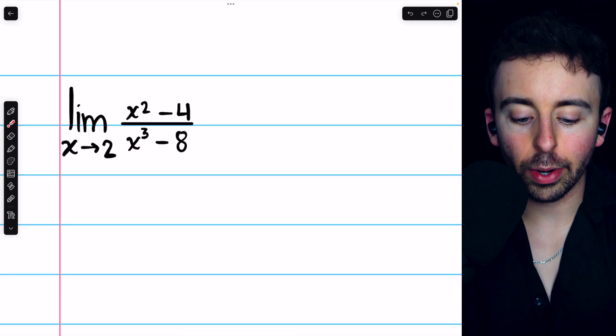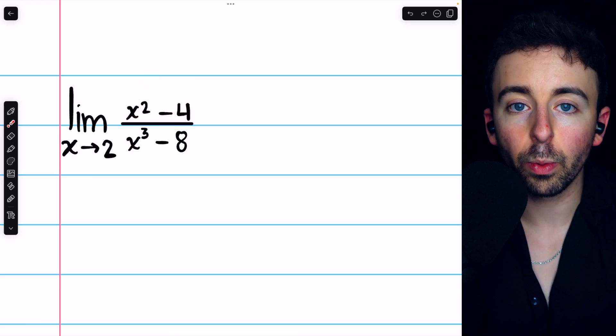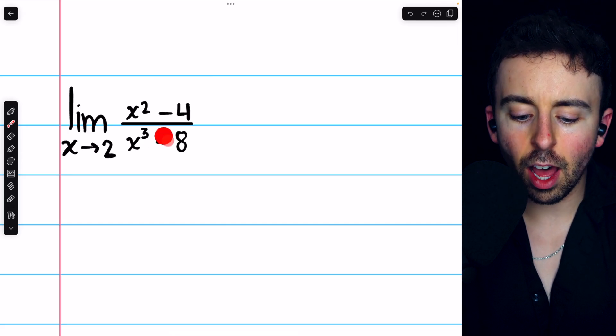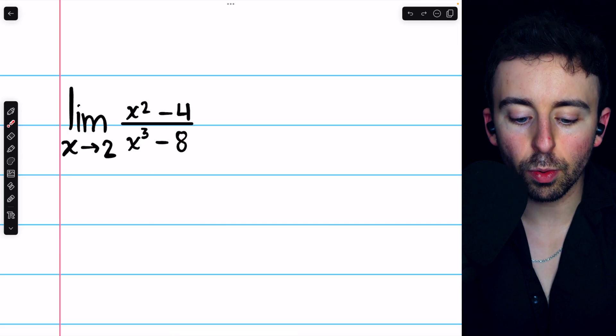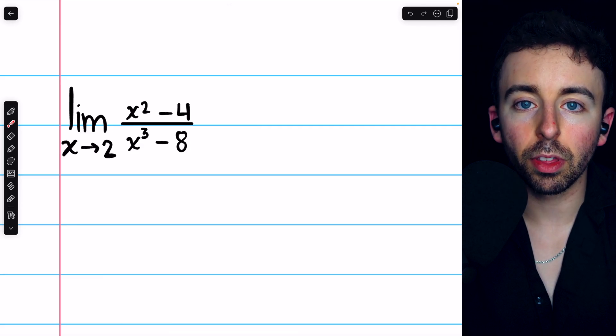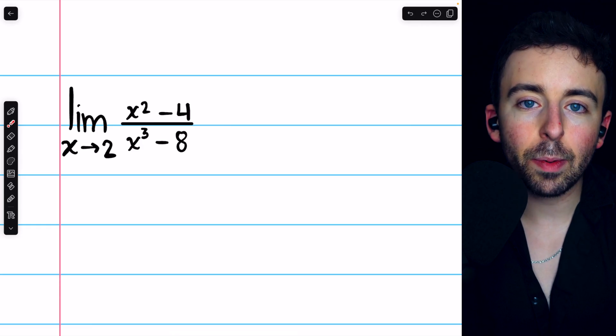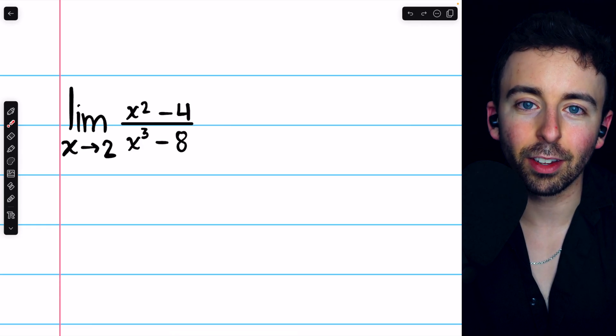Instead, we should notice that the numerator is a difference of squares: x squared minus 4, which is 2 squared. And the denominator is a difference of cubes: x cubed minus 8, which is 2 cubed. So we can factor both the numerator and denominator, and if we do, we may be able to cancel something out to fix this problem.